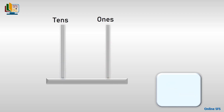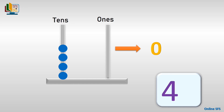Now let's see the next one. Let's count the beads on the tens rod: one, two, three, four — there are four beads on the tens rod. And how many beads are there on the ones rod? There are no beads on the ones rod, it's empty. When we don't have any beads on the ones rod, we will write zero for the ones. So the number shown on the abacus will be four-zero: forty.